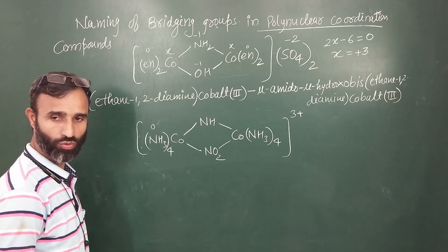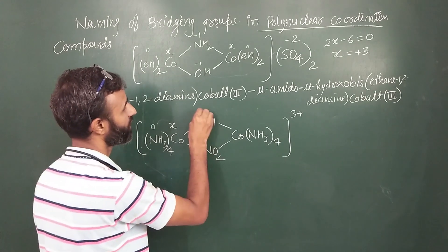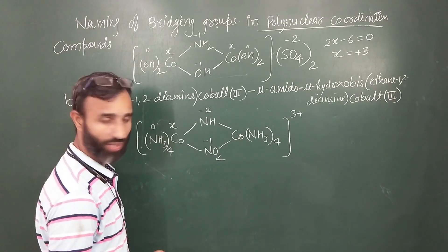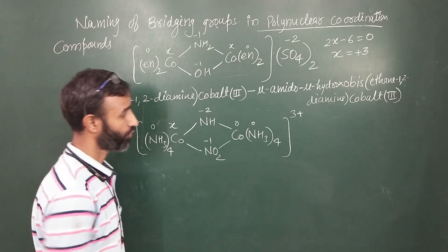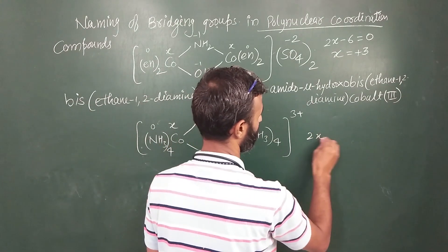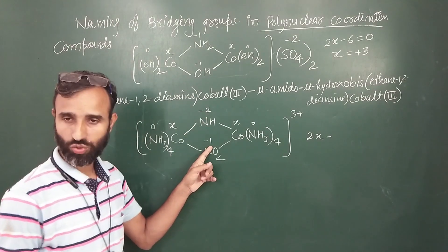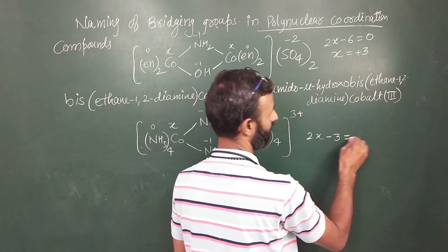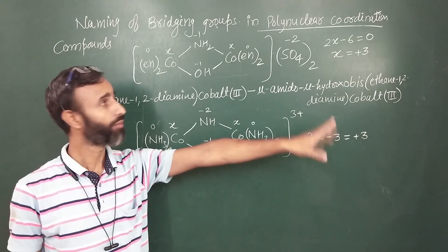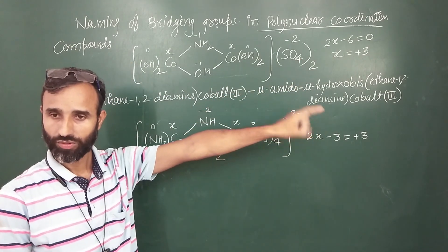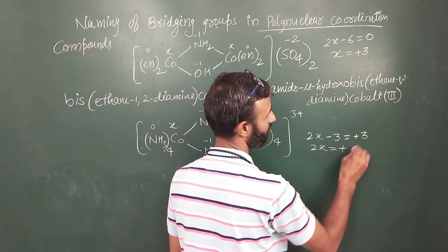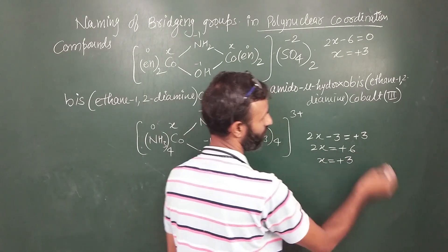Ammonia: 0. Cobalt: X. NH: minus 2. CO N2: minus 1. Zero, zero. Cobalt X. Here we get 2X, and minus 2, minus 1, minus 3, equal to plus 3. The charges are all on this side: 0, neutral. So the charges give plus 3.